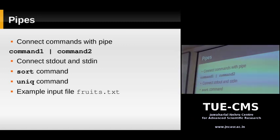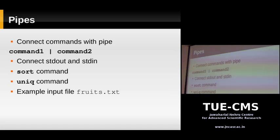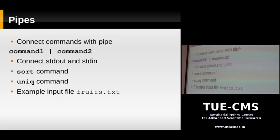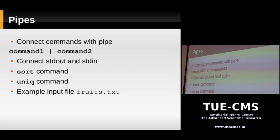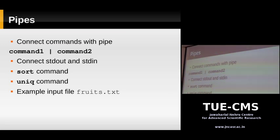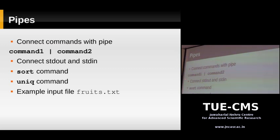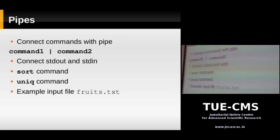Now we'll go to pipes. The standard output and standard error are by default connected to your console, and standard input is connected to your keyboard. In Unix you can connect two commands together using a pipe symbol — the vertical bar. It connects the standard output of command 1 to the standard input of command 2. The standard input of command 1 stays as the keyboard, and the standard output of command 2 still goes to the console.